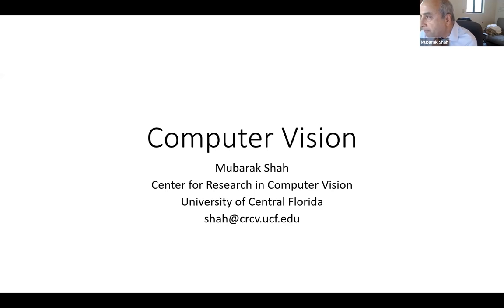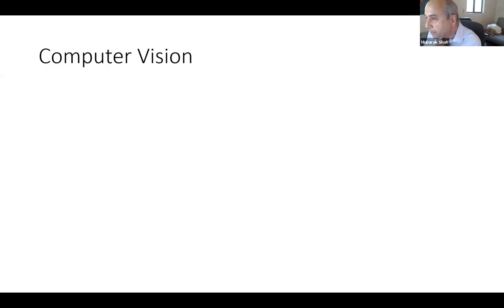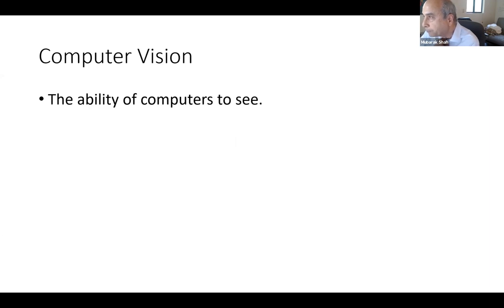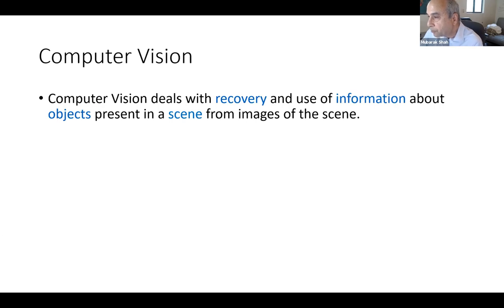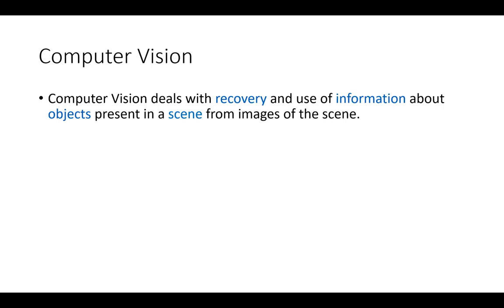So you guys have been listening, learning about human vision. So this talk is going to be about computer vision. Basically, we want to talk about how we can make computers able to see. We will talk about how to develop algorithms and programs that given an input image, a computer can analyze an image.